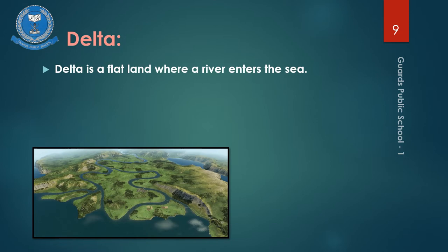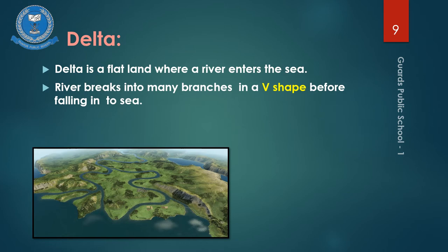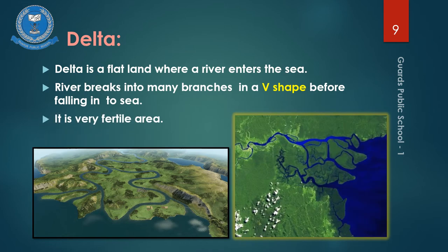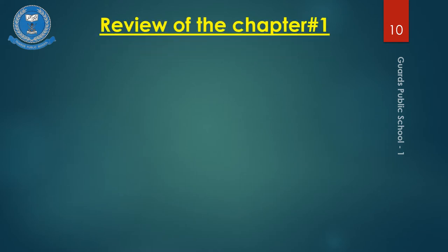A delta is a low, flat land shaped like a triangle where a river breaks into many branches before falling into the sea. It is a very fertile area because of the mud brought down by the river, but it is liable to flooding. In Pakistan, the River Indus forms a delta in Sindh, in southern Sindh.